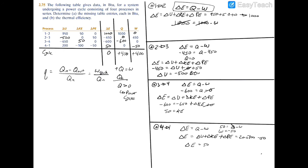In this problem, the thermal efficiency equals the net work of 400 divided by Q_in. Q_in is 1000 — we look at the individual heat transfers: 1000 is positive so it counts, the zero doesn't count, and the negative 600 is not counted as Q_in. Calculating this out gives a thermal efficiency of 40%.